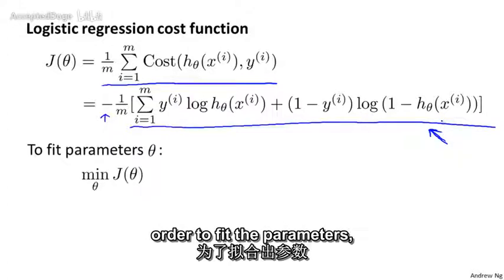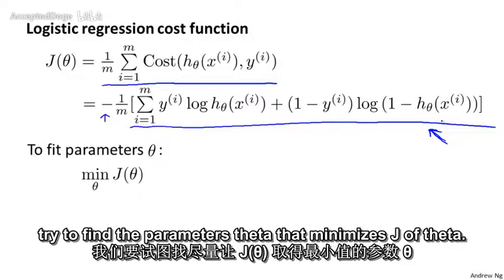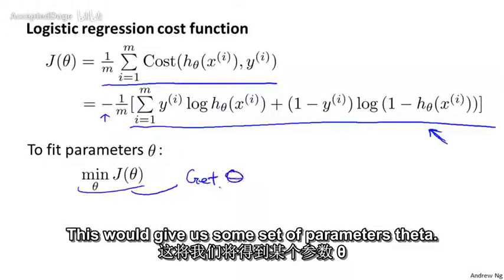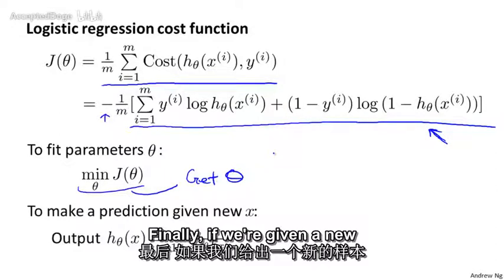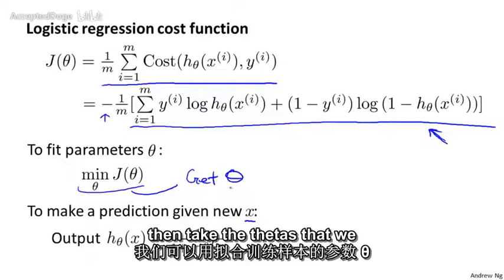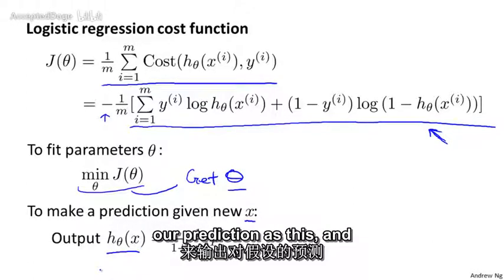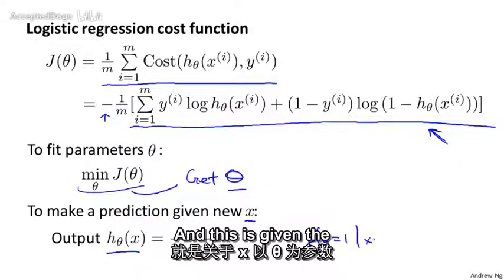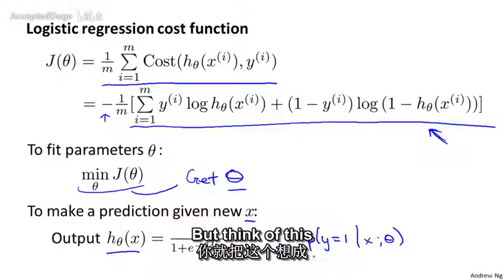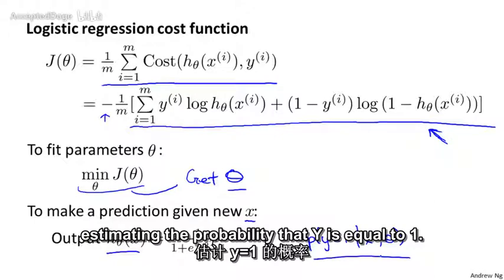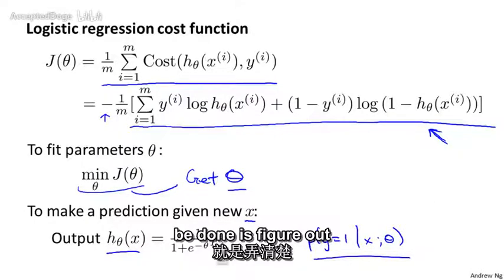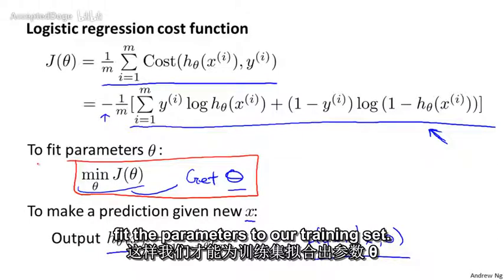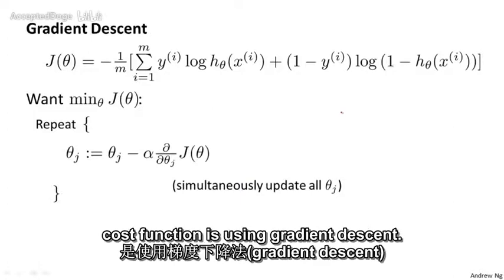Given this cost function, in order to fit the parameters, what we're going to do then is try to find the parameters theta that minimize J(theta). So if we try to minimize this, this would give us some set of parameters theta. Finally, if we're given a new example with some set of features x, we can then take the thetas that we fit to our training set and output our prediction as this. And just to remind you, the output of my hypothesis, I'm going to interpret as the probability that y is equal to 1, given the input x and parameterized by theta. But just think of this as my hypothesis estimating the probability that y is equal to 1. So all that remains to be done is figure out how to actually minimize J(theta) as a function of theta, so that we can actually fit the parameters to our training set.